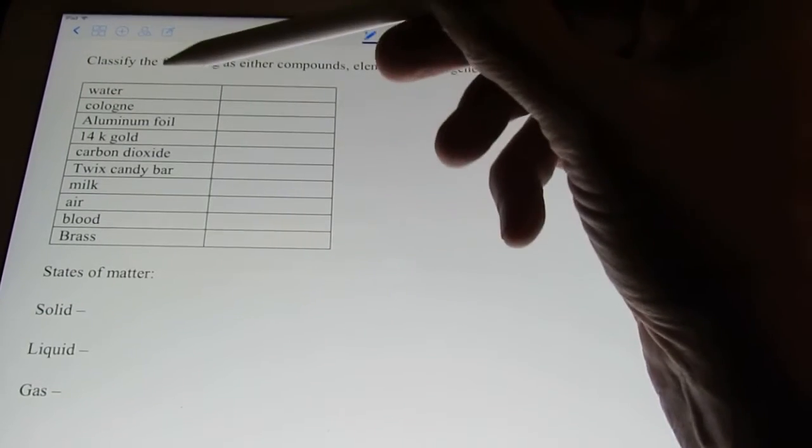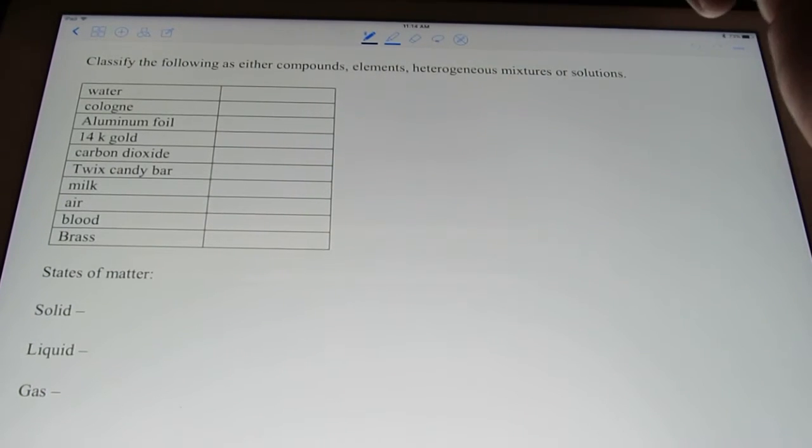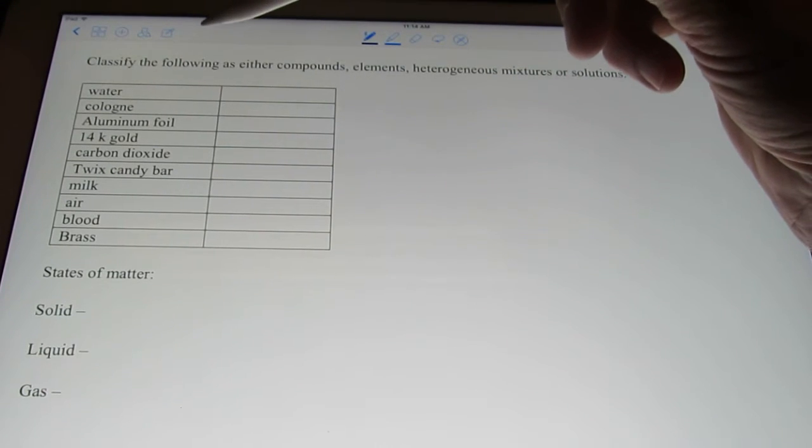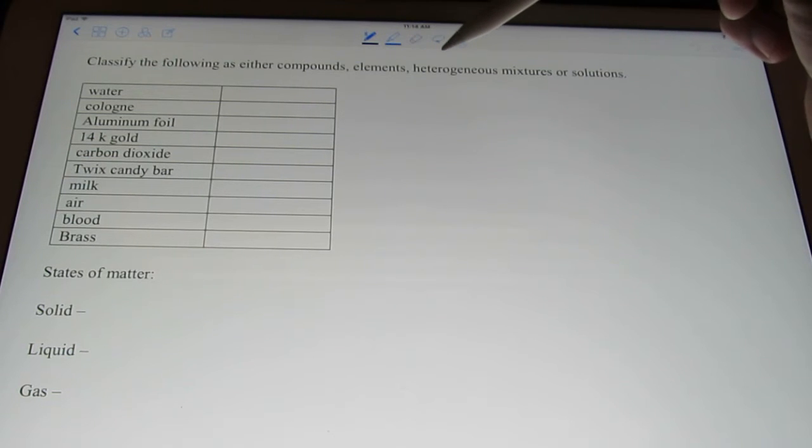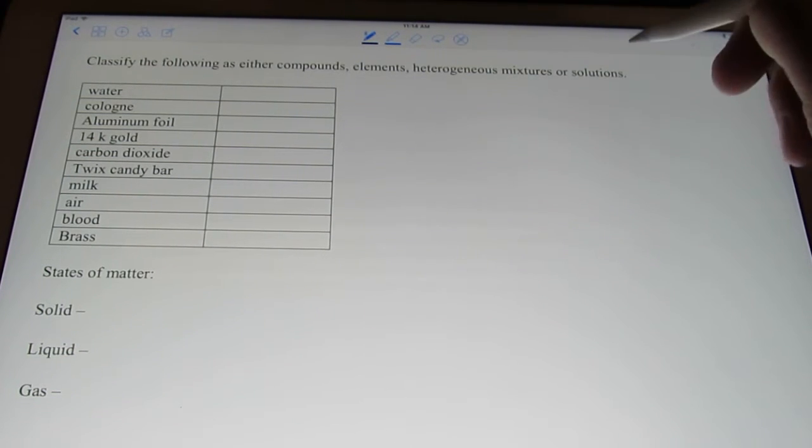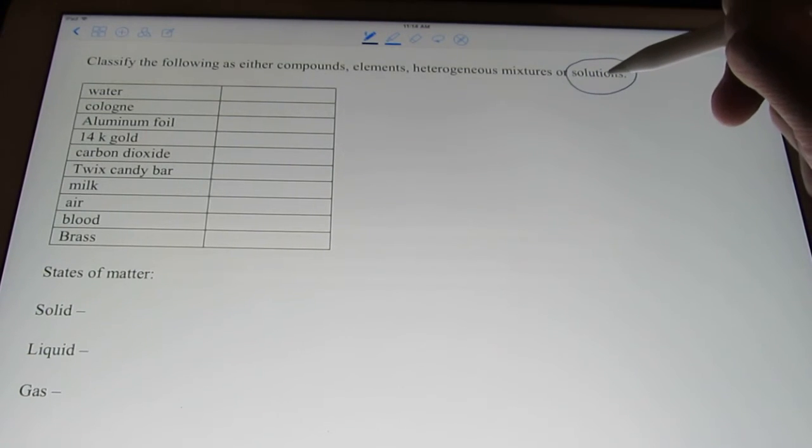So, I came up with a few examples here, some you saw in the previous video. And what I would like to do is classify them as either compounds, elements, heterogeneous mixtures, or solutions. If you remember, solution is another word for a homogeneous mixture.